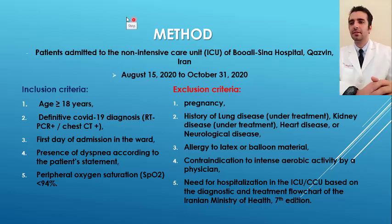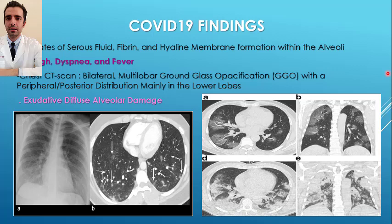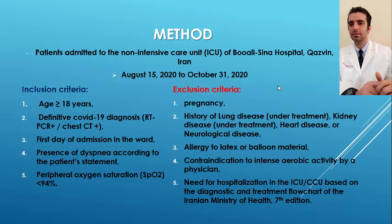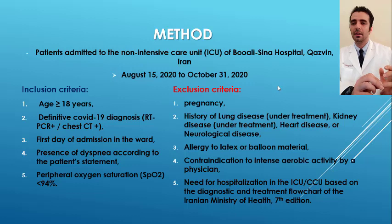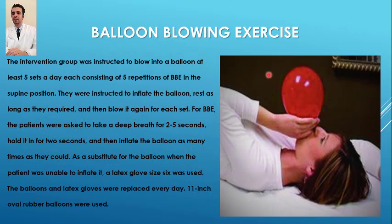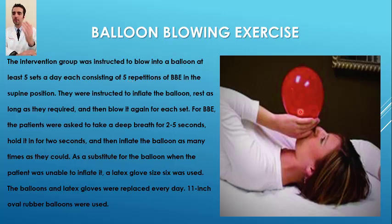This study had a randomized controlled design. Patients who met the inclusion criteria were divided into two groups — intervention and control — based on random number blocks designed by Excel. Both groups received the same treatments and oxygen therapy according to the announced flow chart. The intervention group was instructed to blow into a balloon at least five sets a day, each set consisting of five repetitions of BBE in the supine position without any pillow under their head, and they were instructed to inflate the balloon, rest as needed, and then blow it again.